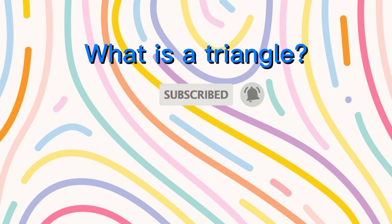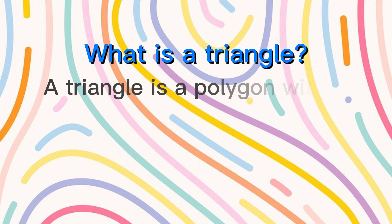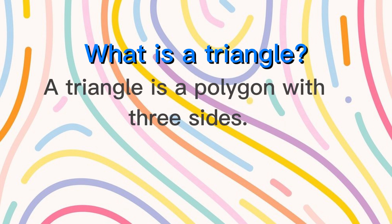What is a triangle? A triangle is a polygon with three sides.